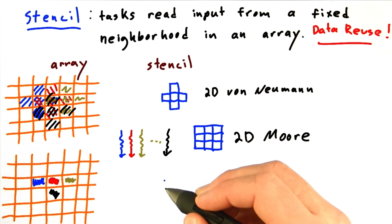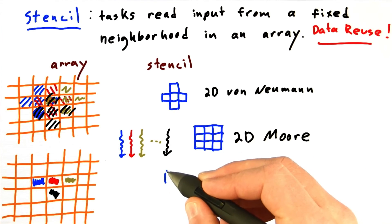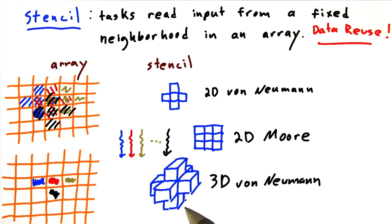There are also 3D analogs of these. For my next trick, I'm going to attempt to draw a 3D von Neumann stencil, which is a cross shape extending in all three dimensions. Hopefully you can see that from the drawing.